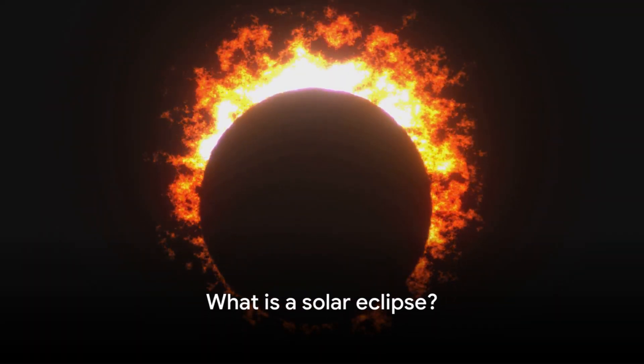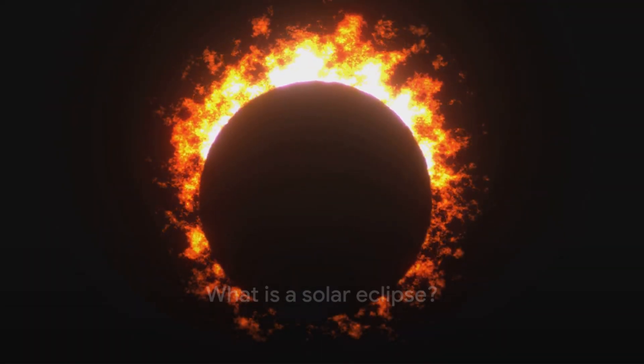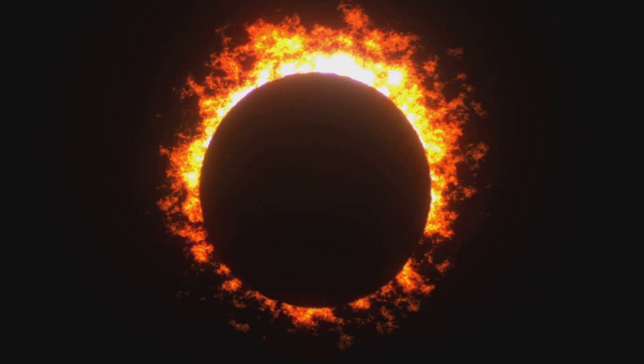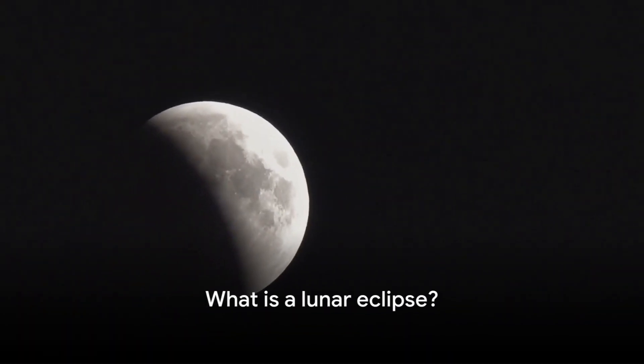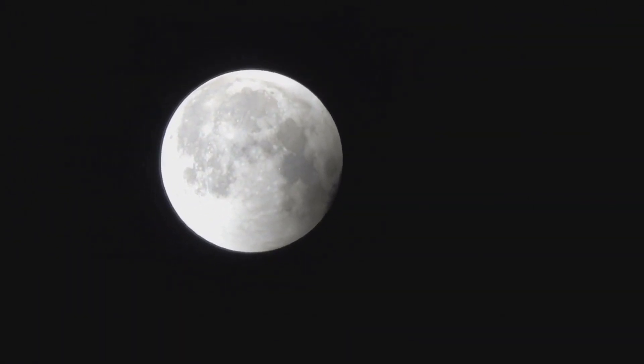A solar eclipse occurs when the moon passes between the sun and earth, blocking the sun's light and casting a shadow on earth. A lunar eclipse occurs when earth passes between the sun and the moon, causing the moon to move into earth's shadow and appear darkened.